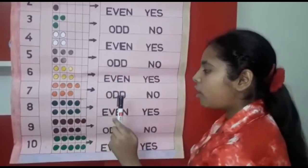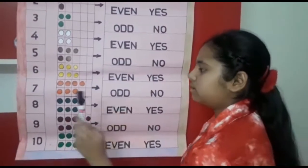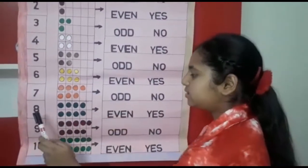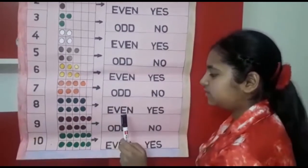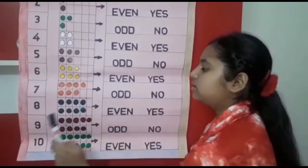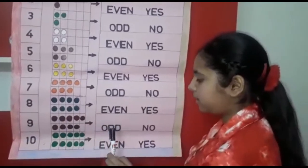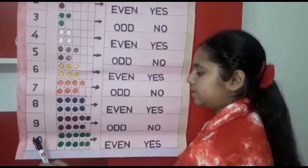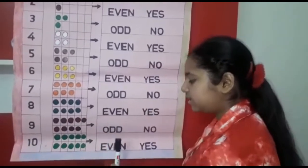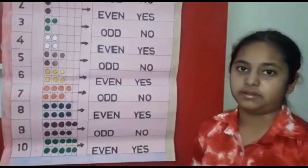7 is an odd number. 8 is an even number. 9 is an odd number. 10 is an even number.